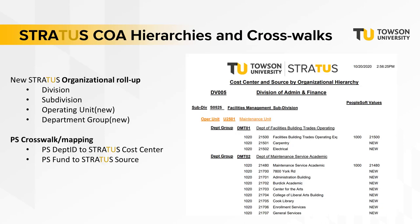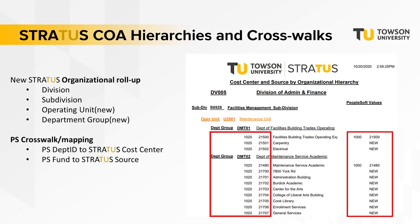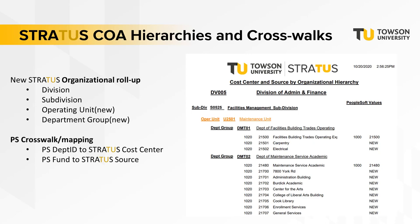The Stratus Chart of Accounts provides new organizational roll-ups to Division, Subdivision, Operating Unit, and Department Group. Note that the Operating Unit and Department Group are new features for Stratus. A sampling of the Stratus Chart of Accounts hierarchies and crosswalk is provided here for review. The PeopleSoft crosswalk mapping sample depicts the alignment of the PeopleSoft Department ID to the Stratus cost center, and likewise the PeopleSoft fund to the Stratus source. Notice the Stratus values going vertically on the left and the alignment to the PeopleSoft values vertically on the right. Here you can see the new Stratus Operating Unit and Department Group features drill down to a more finite accounting tracking process, allowing departments to roll their revenues and expenses up to the highest level within the university and everywhere in between. No longer should departments need to track costs within their departments in shadow systems.